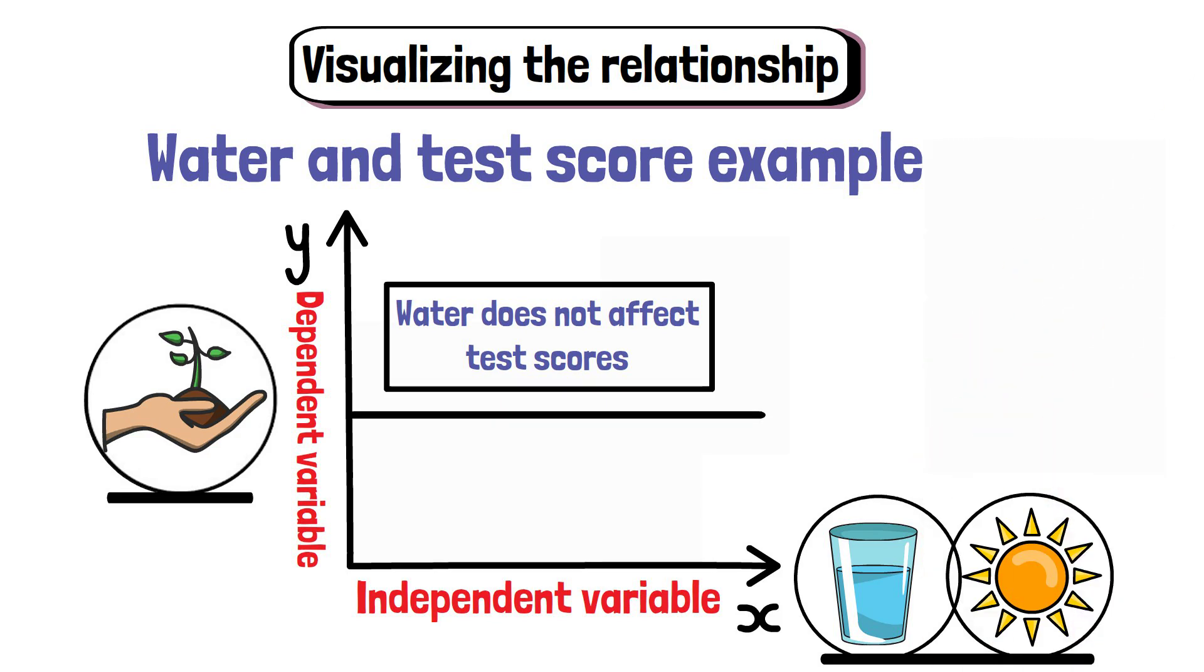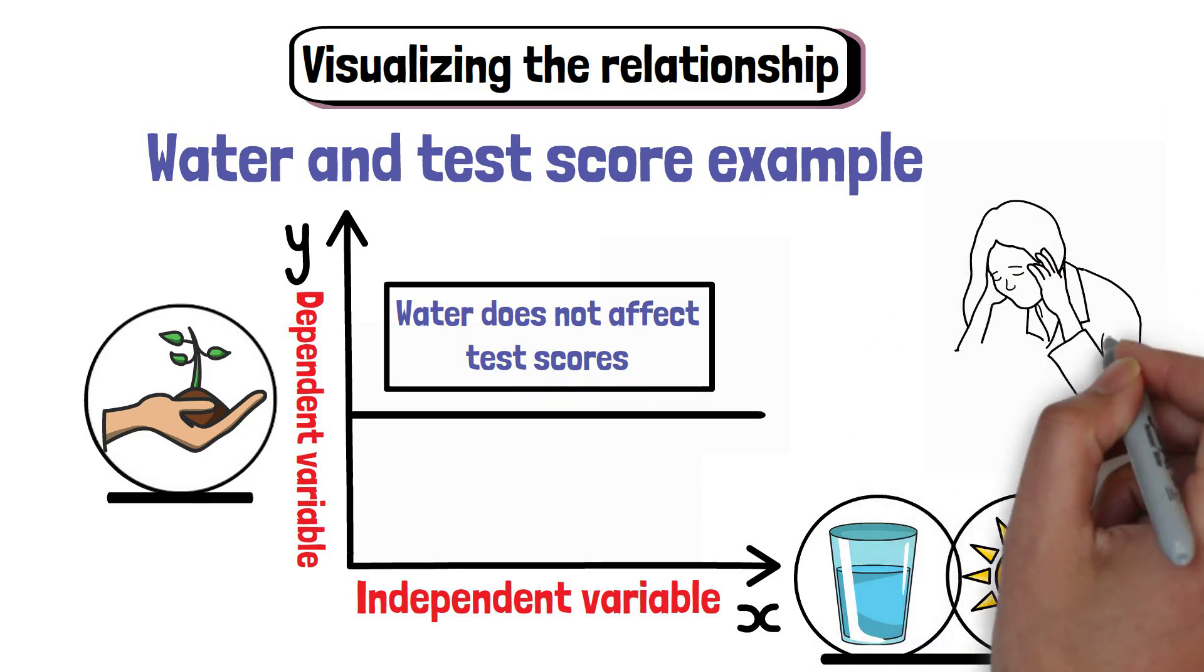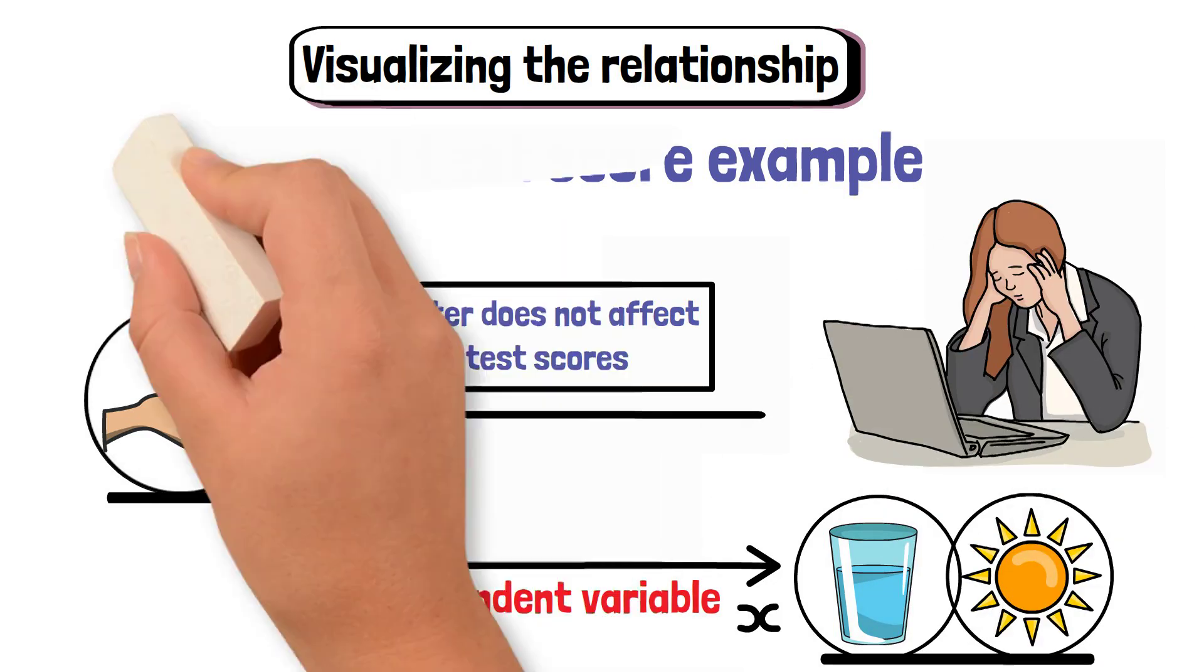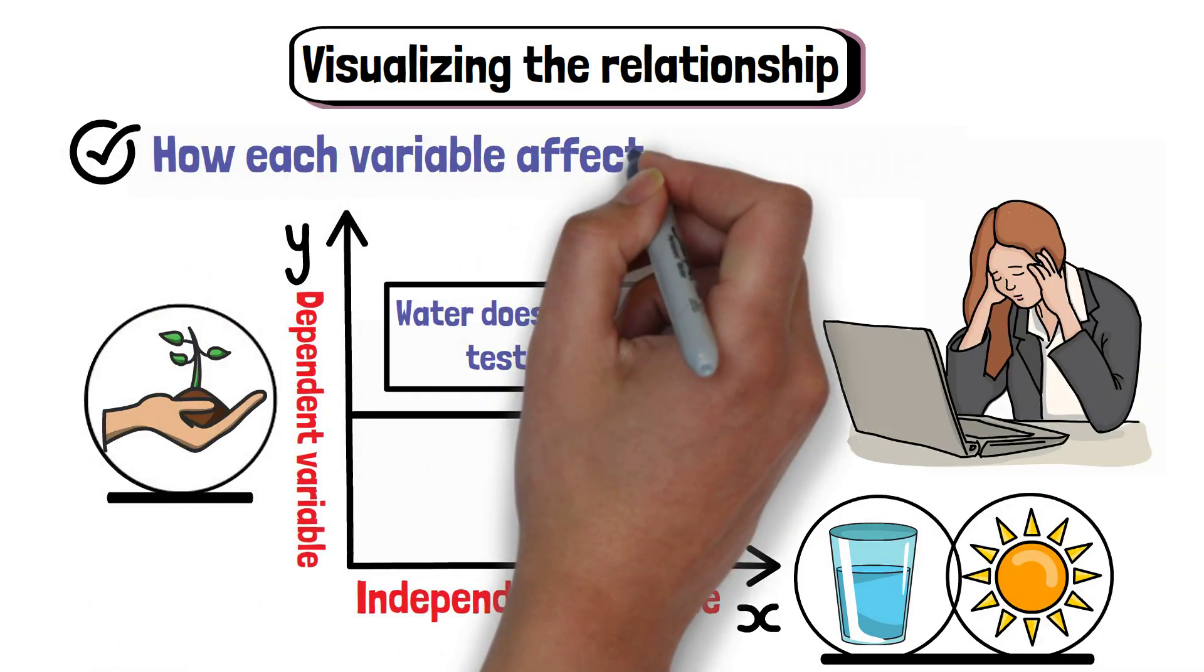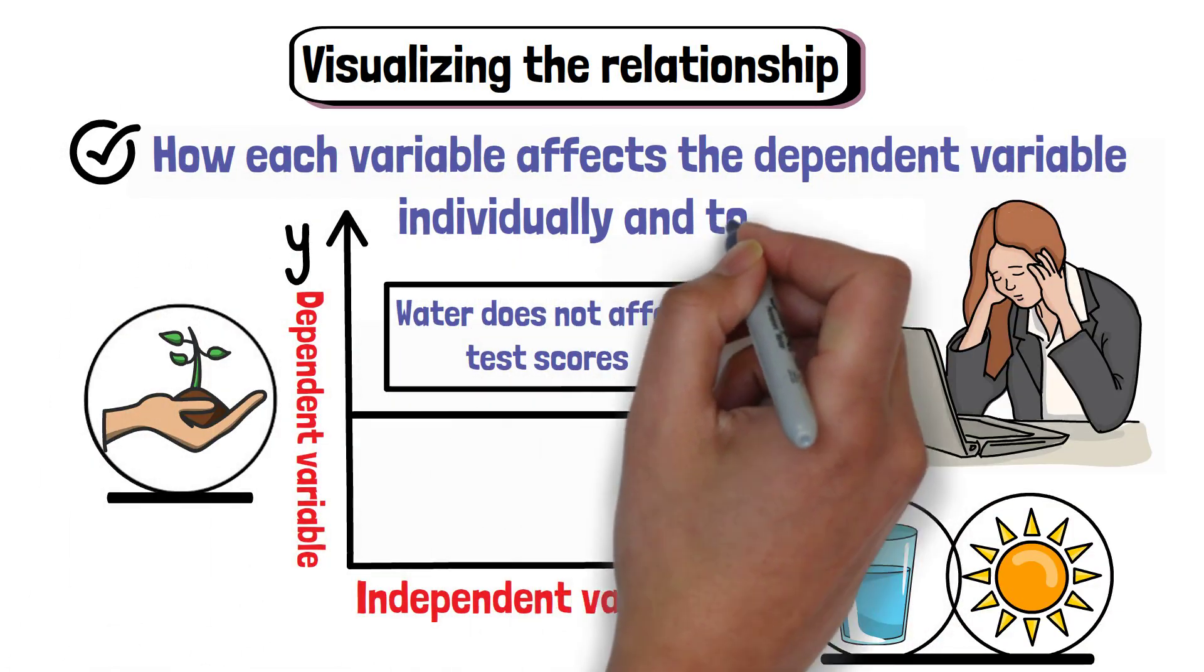When you have multiple independent variables, analysis becomes more complex. You need to look at how each variable affects the dependent variable individually and together.